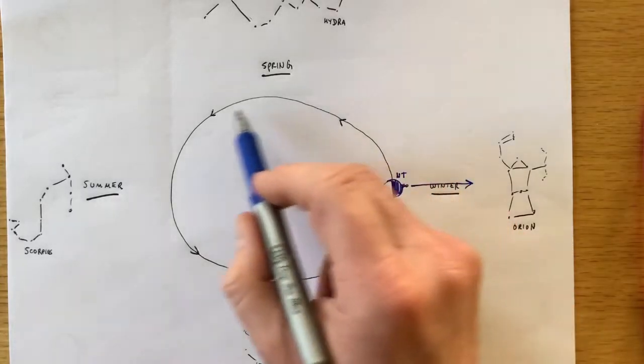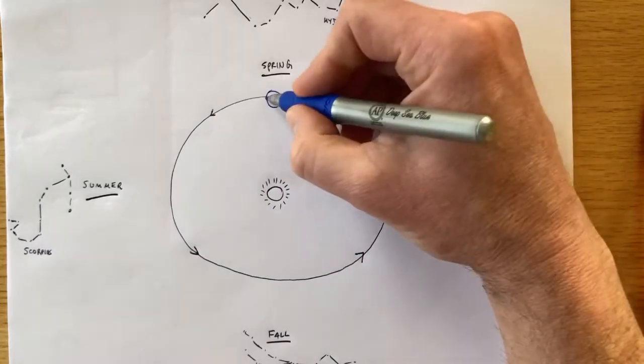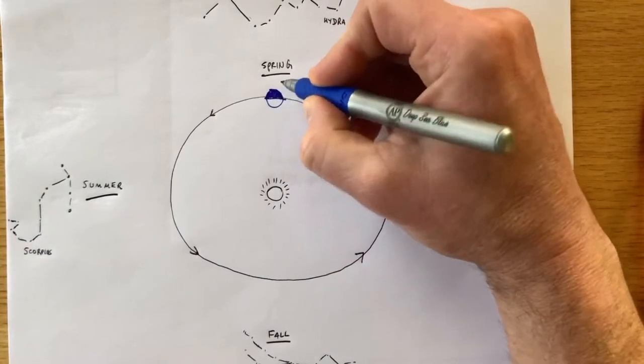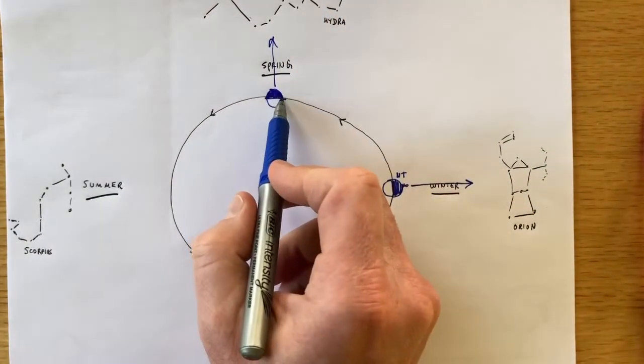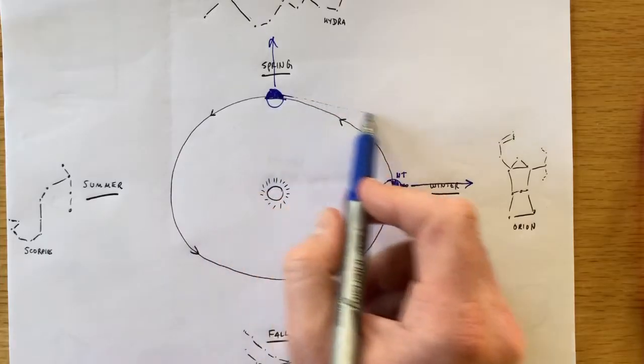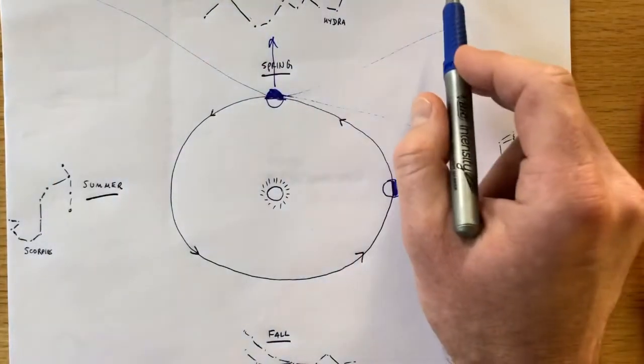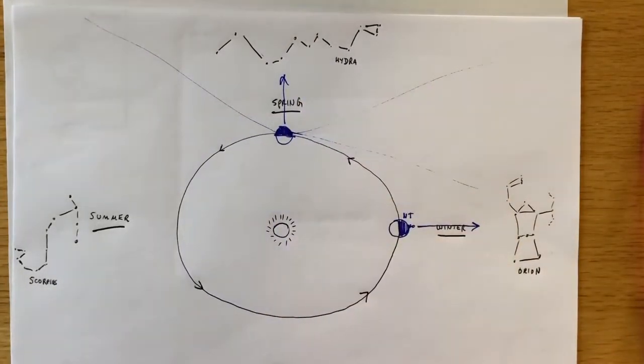Now, as we go around the Sun throughout a year, we go from winter to spring. So let's put the Earth over here. Now, the night sky, or the dark side of the Earth, is facing this direction. If you want to see Orion, right as the Sun sets, you might be able to see him. But for the most part, what are you going to see? You're going to see constellations off this direction, like Hydra, which is a serpent by the way. I know it doesn't look like much, but that's Hydra the serpent.